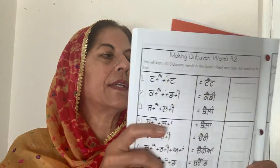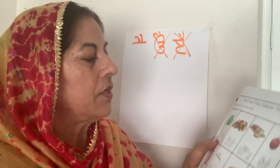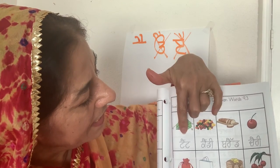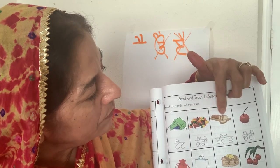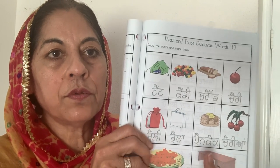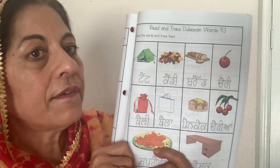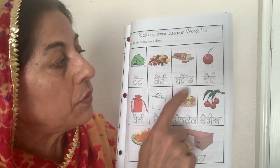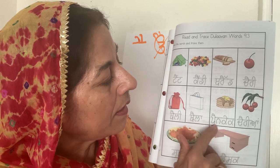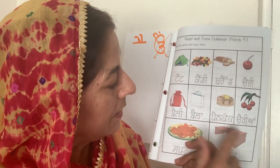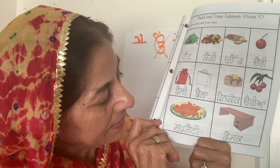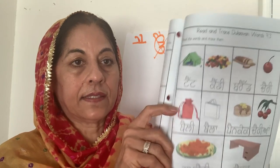The next page shows pictures of the words. We have tent, candy, bread. What other breads do you know? You know roti, pronti, naan — all of those are breads. Cherry, Thali, Thala, pancake, spaghetti, and desk. Let's move to the next page.